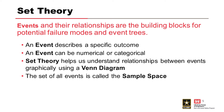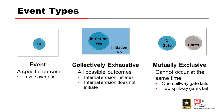We can use set theory to describe relationships between events graphically using a Venn diagram. The set of all events in our risk analysis is called the sample space. Collectively exhaustive events cover all possible outcomes and fill up the entire sample space — for example, either internal erosion initiates or it does not. Mutually exclusive events cannot occur at the same time. For instance, you can have 0, 1, or 2 spillway gates failing, and those events cannot overlap.